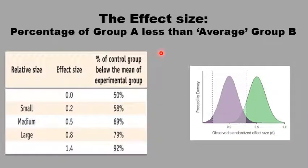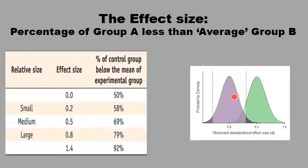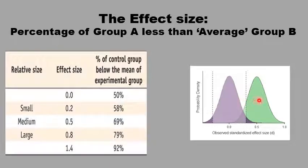A third way of estimating the effect size is to see the percentage of scores in one group that is less than the mean of the other group. By definition, the mean of a group would have 50% of scores below and 50% above. So if 50% of one group is less than the mean of the other group, the two distributions are almost identical. But if 90% or 80% of one group is less than the mean of the other group, there is a large difference. If it is about 70%, then it is a medium difference.